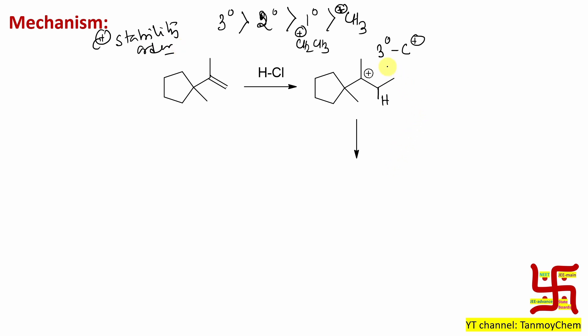Here we got tertiary carbocation, so relatively more stable. Now will the reaction stop here? The answer is no. Why? Because carbocation stability we have, but there is another part possible: ring strain relief. These carbons can migrate.